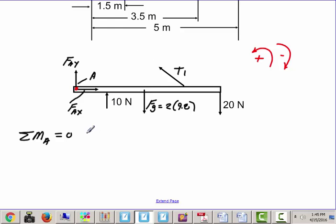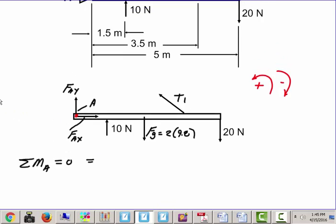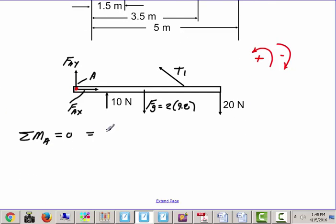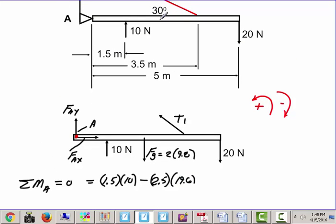I'm going to take a moment around A and set it equal to 0, because the object's obviously not going to accelerate or have any type of angular acceleration. The beam is just sitting there. We come to the 10. The 10 is going to be 1.5 away. So, we say 1.5 times 10. We make that positive, because that's making it want to rotate this way. We come to this guy here, which in this case is going to be 19.6. So, it's going to be minus, and now we go half the distance of the beam, 2.5 times 19.6. We're doing half, because the center of mass would be halfway right in here.